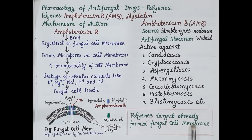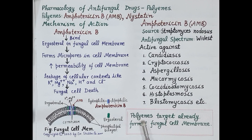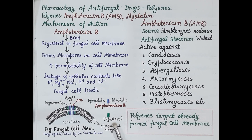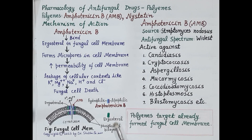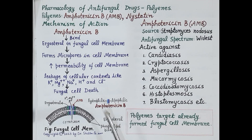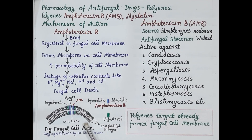Another very important point is that in addition to ergosterol in the fungal cell membrane, polyenes also bind to cholesterol present in the human cell membrane, though with lesser affinity. So they produce micropores in the human cell membrane as well, making polyenes highly toxic.